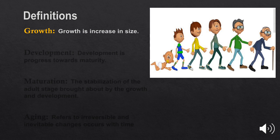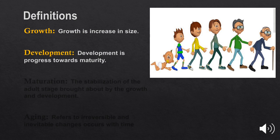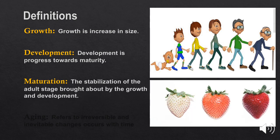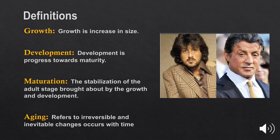As we see in the picture, from the child to old age, development is progress toward maturity. Maturation is the stabilization of the adult stage brought about by growth and development — as we see in this strawberry, the same size but with different color indicating different maturation. Aging refers to irreversible and inevitable changes that occur with time, as we see in Sylvester Stallone when he was young compared to when he became older.